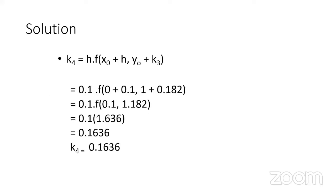For k₃, using the same formula as k₂ but with k₂ in place of k₁, we get an answer of approximately 0.182. For k₄, you use the full step size and the preceding k₃ directly: f(x₀ + H, y₀ + k₃). This gives f(0.1, 1.182). Plugging y = 1.182 into -2y + 4 gives 1.636, so k₄ = 0.1 × 1.636 = 0.1636.